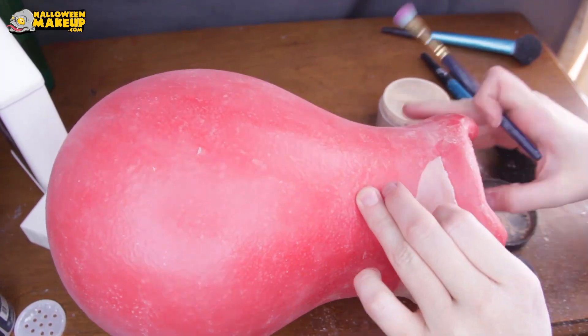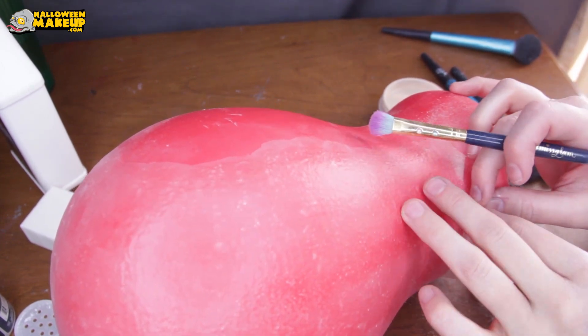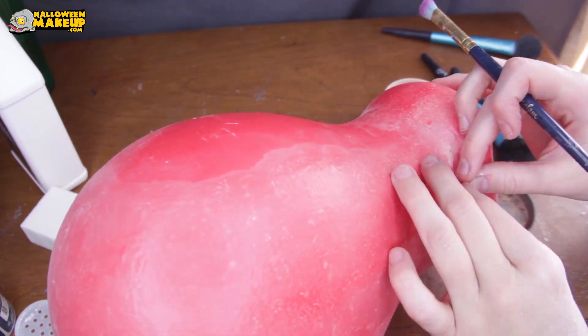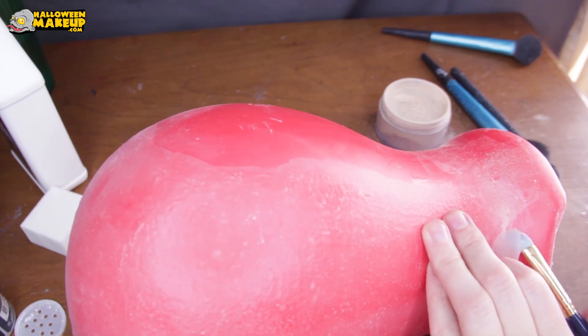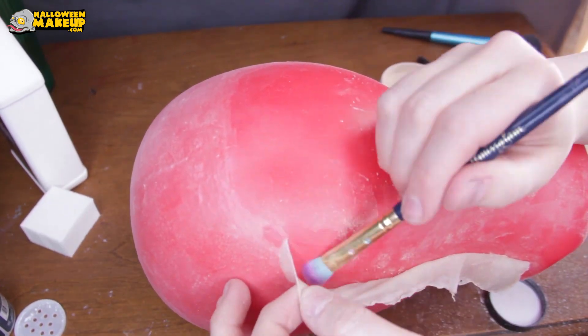Again being very careful because if there's a part of it that has not been powdered and it touches itself, it is going to stick to itself and there's a chance that it will tear or you just can't remove it and you're going to have a nasty wrinkle.